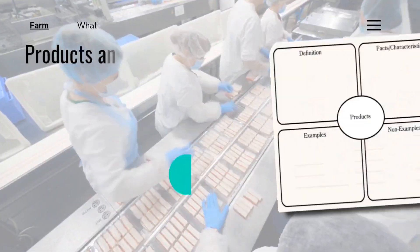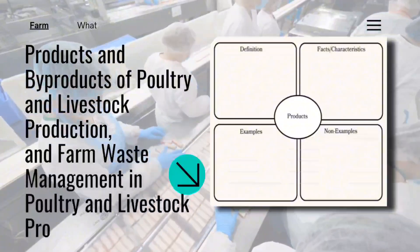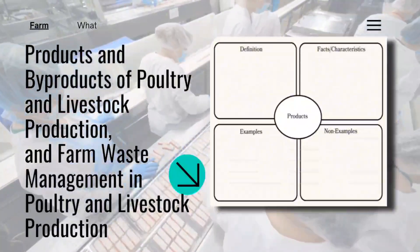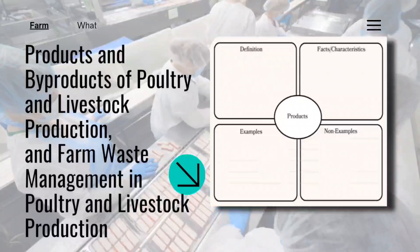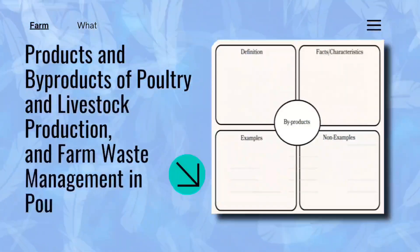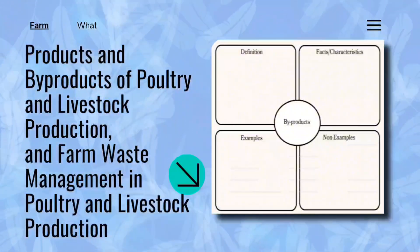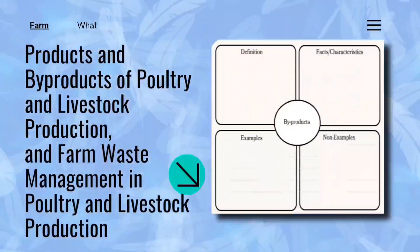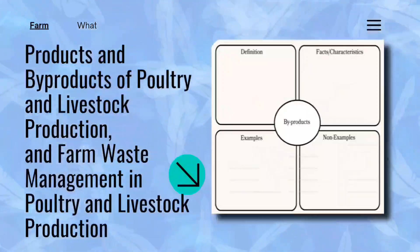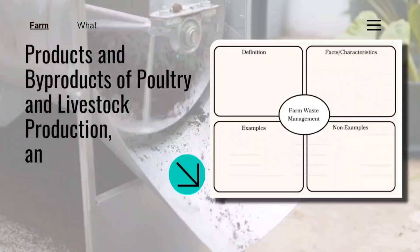Para sa ating gawain, ito ay tinatawag na Think Tank. Magsagawa ng graphic organizer tungkol sa mga products at byproducts ng pagpapalaki ng manok at hayop, at mga paraan ng pamamahala ng basura mula sa farm. Isulat ang depinisyon, characteristics o facts, examples, at non-examples ng products, byproducts, at waste management system sa graphic organizer.